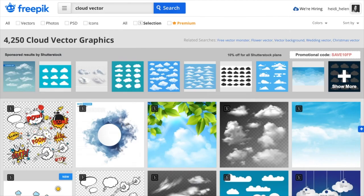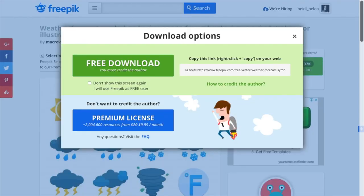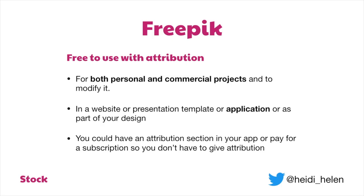Freepik is another one that's quite similar — you can search for vectors on there as well. Again, you can download for free if you give attribution, or get a premium license which is a monthly subscription. Freepik allows you to use anything with attribution for personal or commercial projects, but they do want you to slightly modify something — for example, change a color or combine it with other graphics. And they do state in their license that you are allowed to use it in applications.